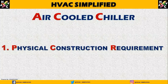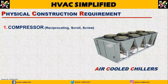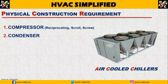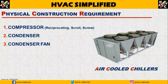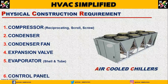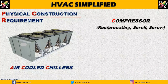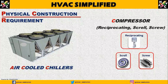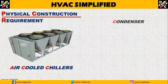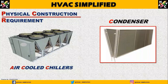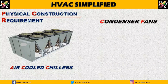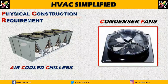Physical construction requirements of the air-cooled chiller. The first component is the compressor. Next is the condenser — this is the air-cooled condenser, which is why we call this particular type of chiller an air-cooled chiller, because of the condenser type. The next component is the condenser fan, which is used depending on the load requirement and capacity.